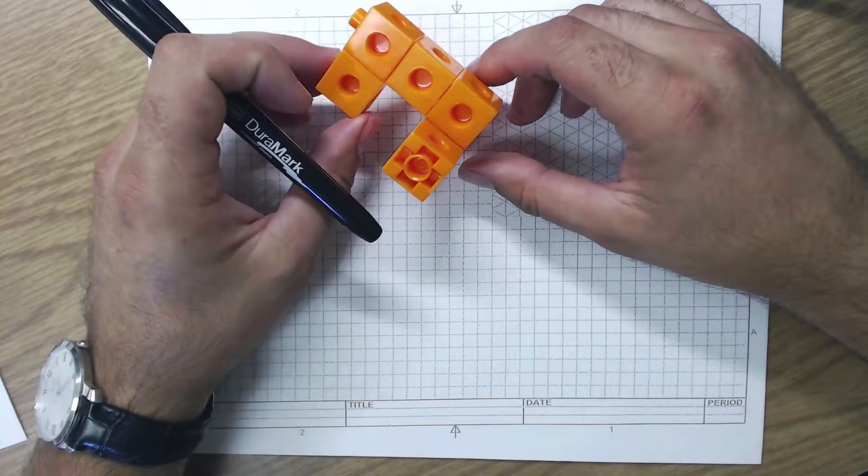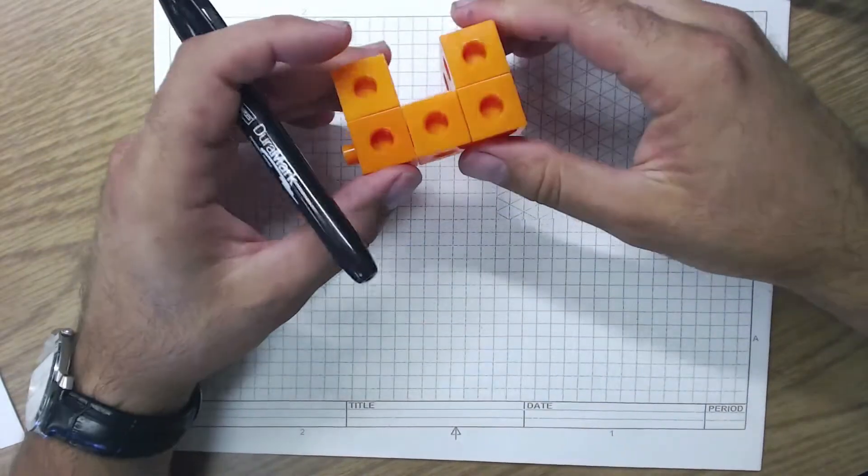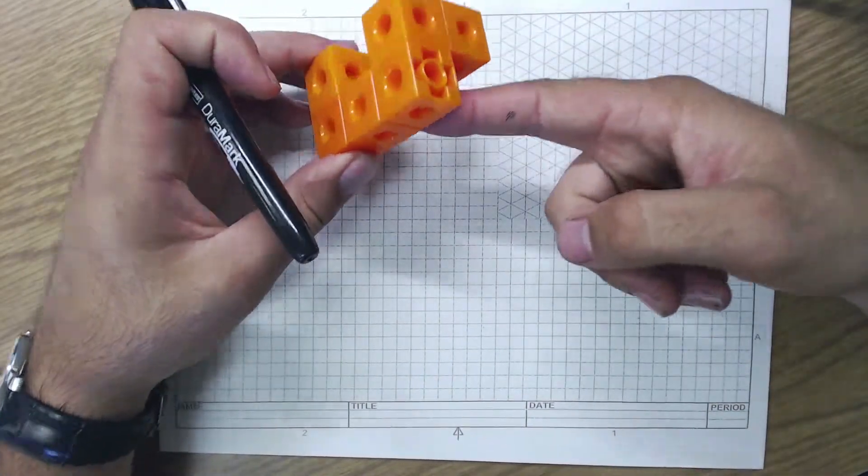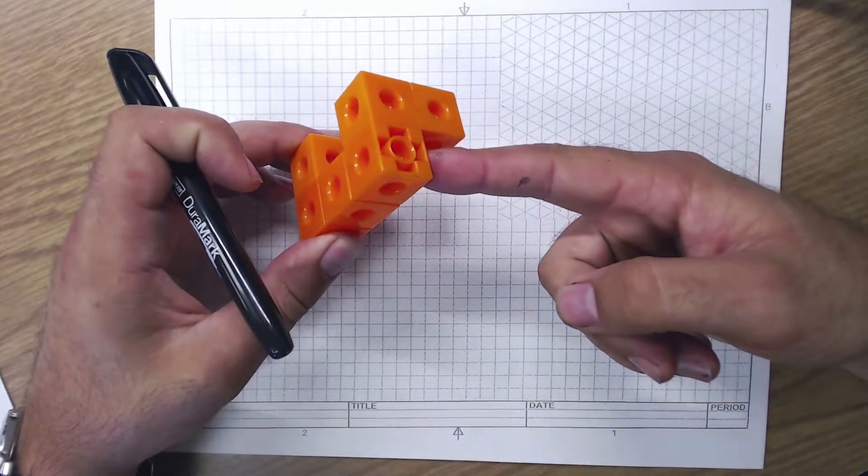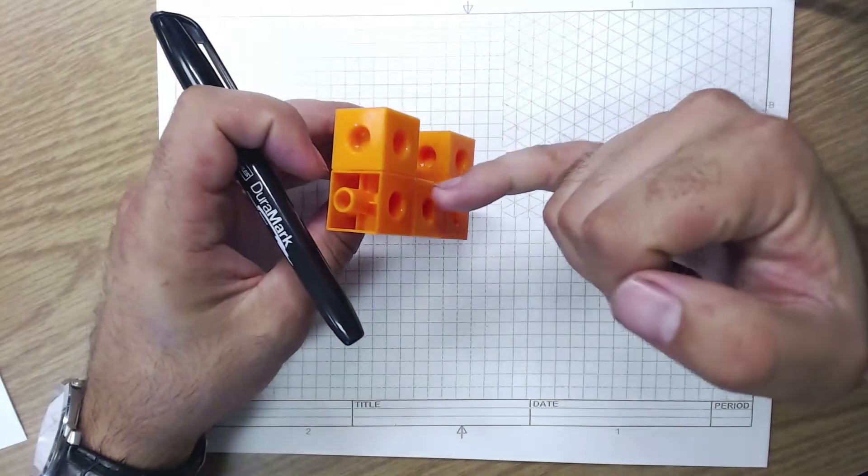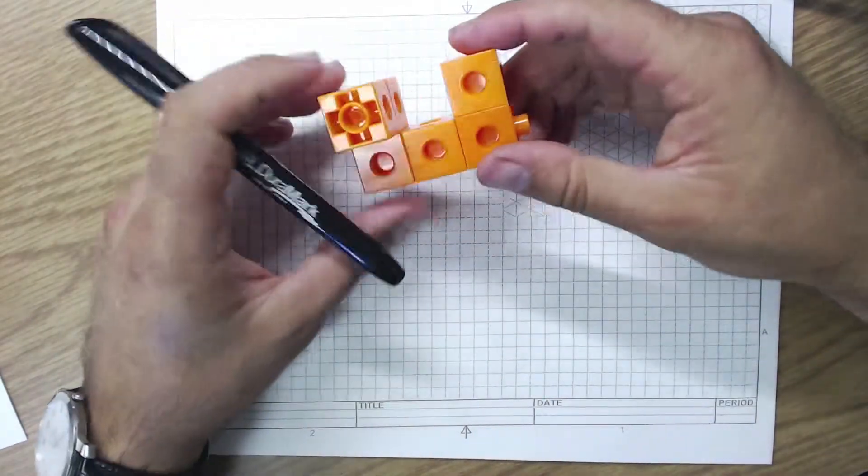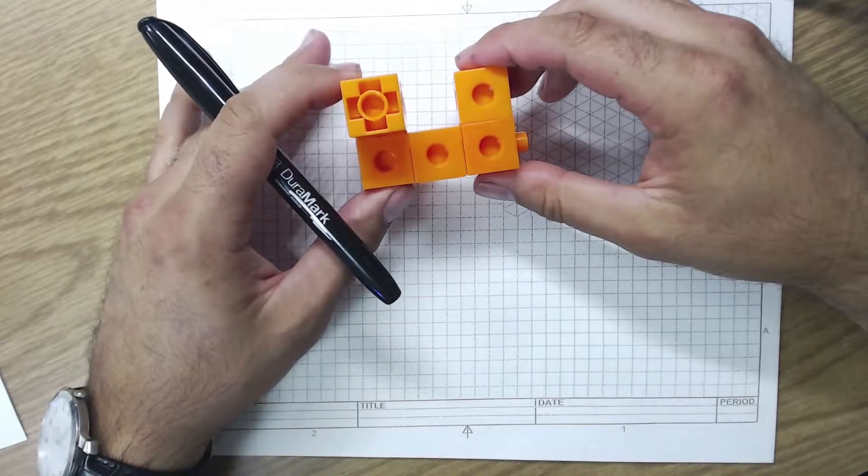Now I have to pick my best front view. And there's a couple of viable options. It's not this one back here because then this line back here is going to be hidden. I'm not going to do this side because then this piece up in here is hidden.